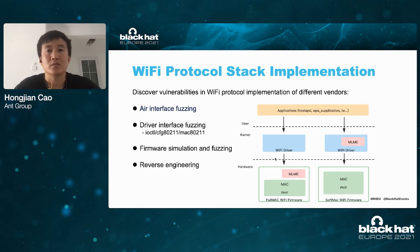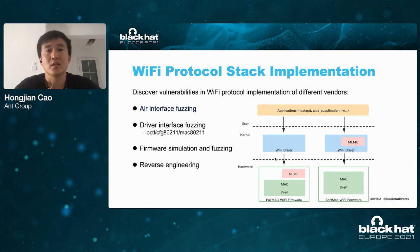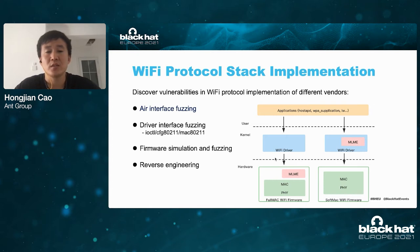Different methods can be used to discover vulnerabilities in the implementation of Wi-Fi, such as through air interface fuzzing, driver interface fuzzing, firmware simulation and fuzzing, or through reverse engineering. First, we use the air interface to fuzz the Wi-Fi.